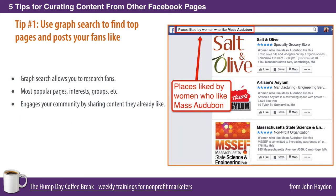So let's get into these tips. The first one is to use Facebook Graph Search to find top pages and posts that your fans like. Graph Search is a default search feature in Facebook — you literally just log in as yourself, the person, not your page, go to facebook.com, and you start typing in search strings. I'm going to show you a couple of examples in just a moment.